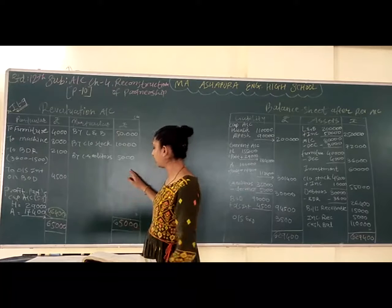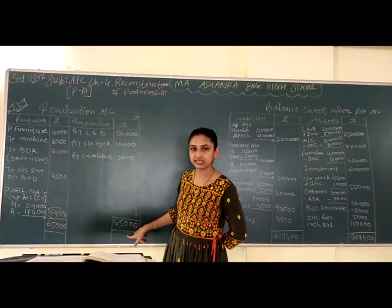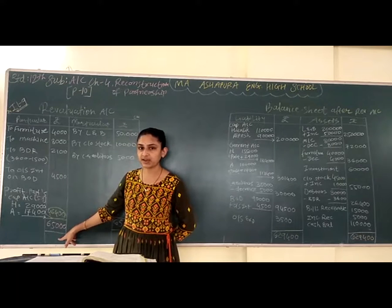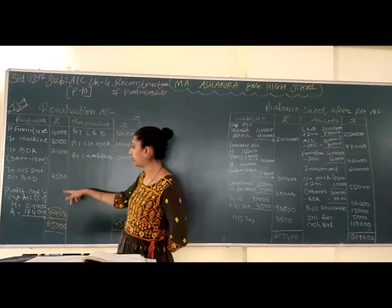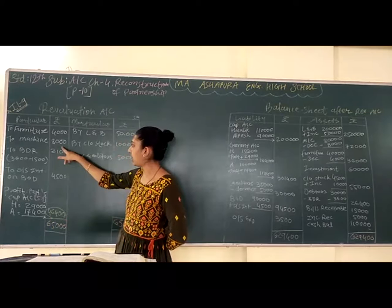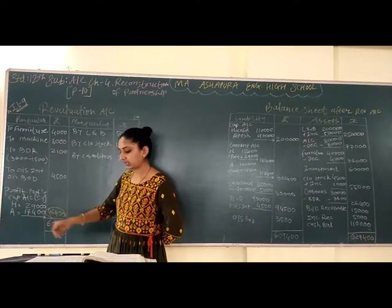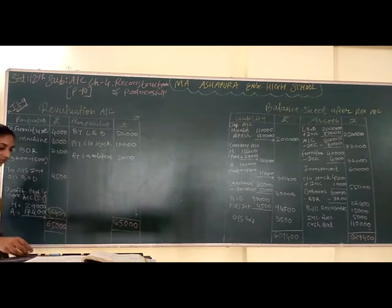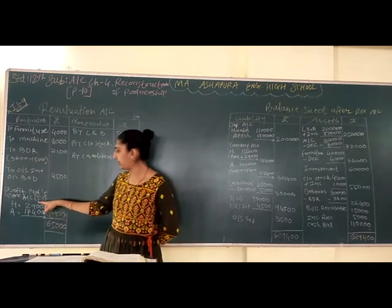Ab isko karna hai close. Ready side ka total zyada hai, which is 65,000. Same total yahan pe put up karna hai — 65,000. Phir difference find karna hai; is taraf difference aayega. Profit of revaluation account — in charon ko minus karenge, to humein milega 46,400. Aur yahan pe yah jo profit hai, jo jayega partners' current account mein. Profit should be transferred to partners' current account in the ratio of 5:3.